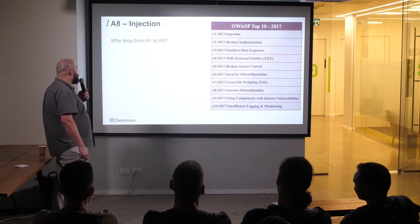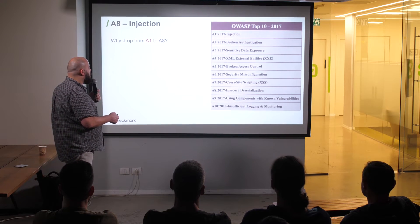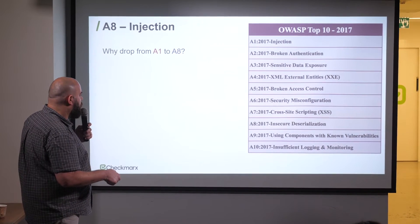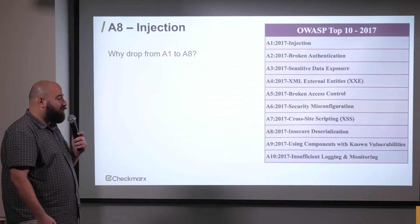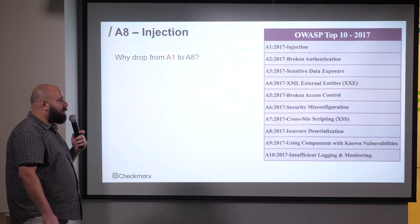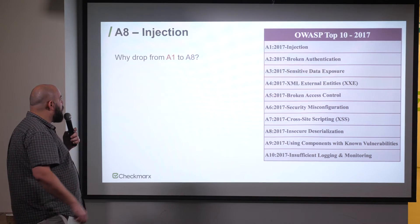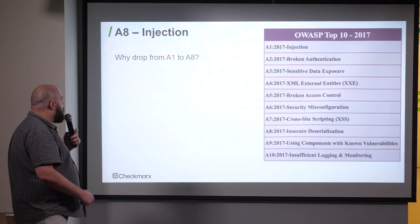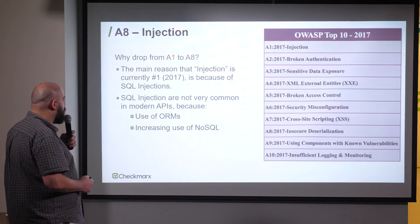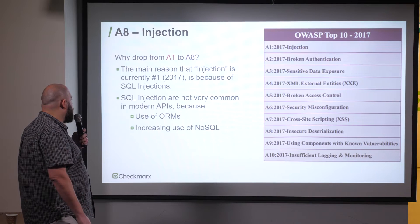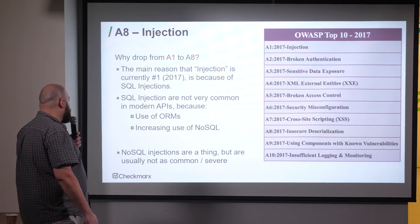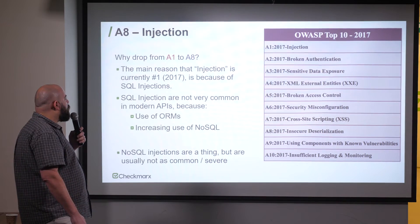A8 — Injection. The OWASP Top 10 has injection, XXE, and deserialization — all of which are actually injection but important enough to get their own items. Why did we move A1 to A8? Injection is currently number one in the OWASP Top 10 mainly because of SQL injections. But SQL injections are getting less and less common in modern APIs because of ORMs and NoSQL databases. SQL injections are still a thing, but not as common or severe as before, so we dropped it down.